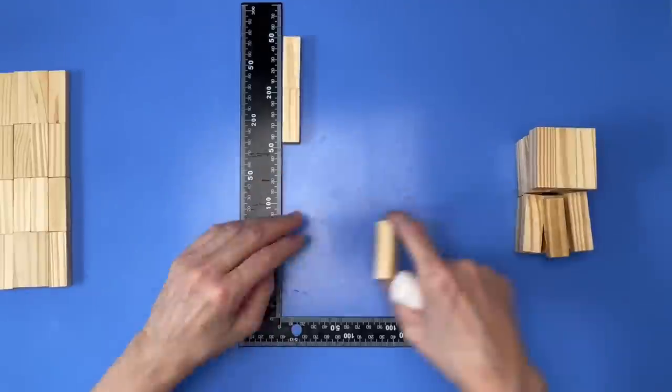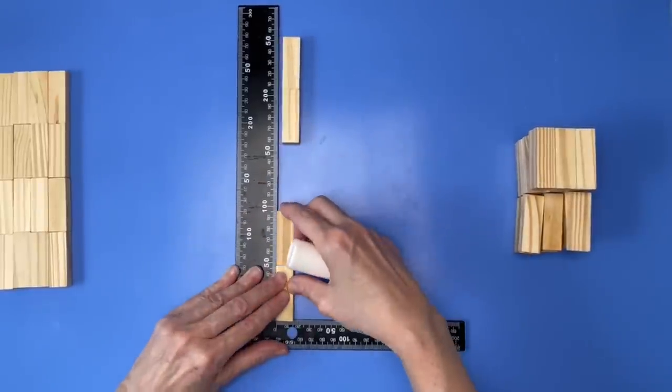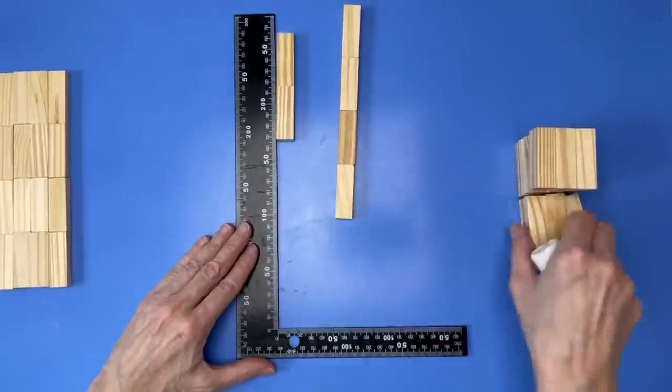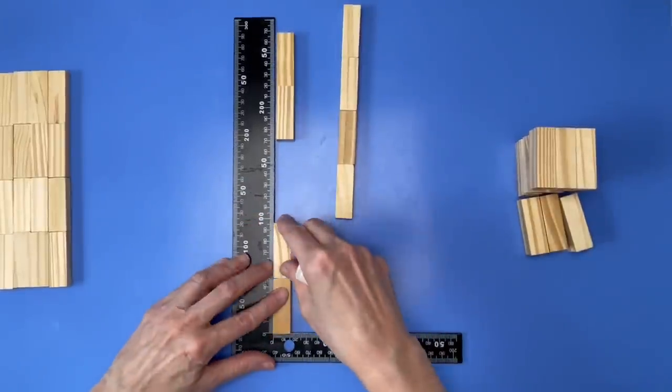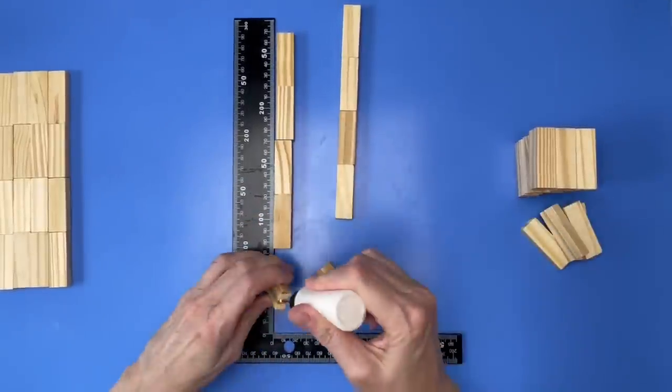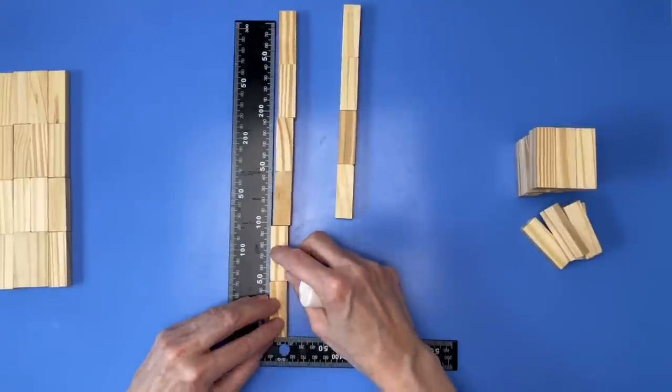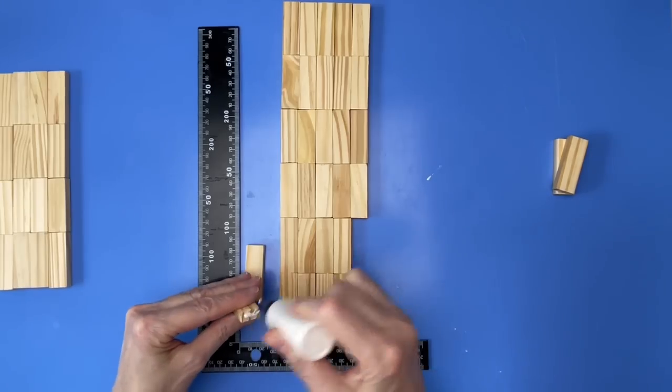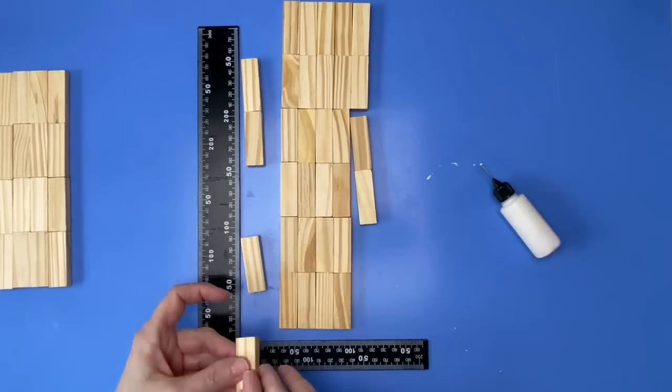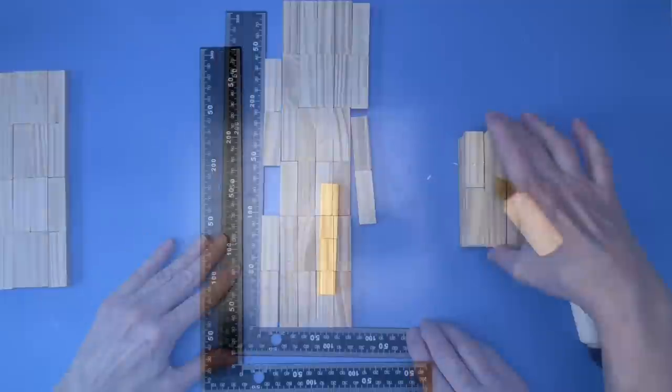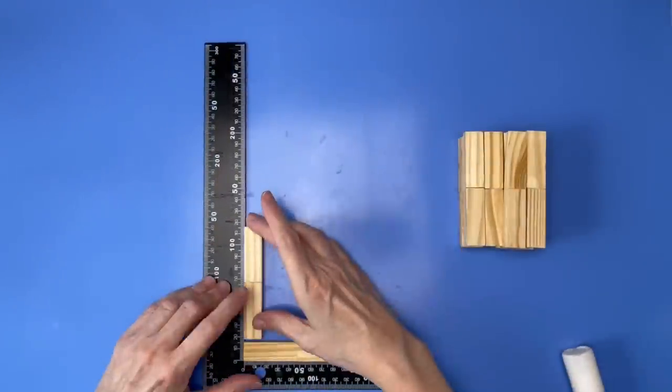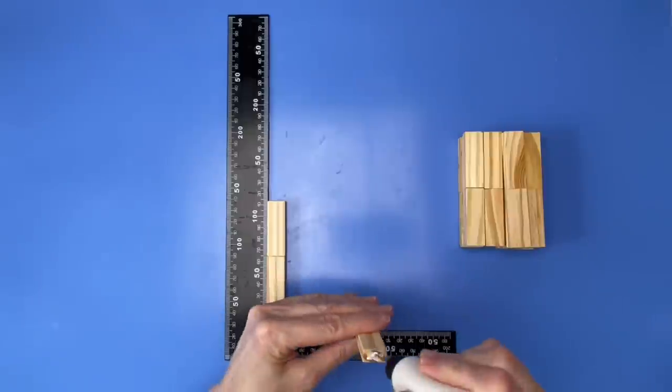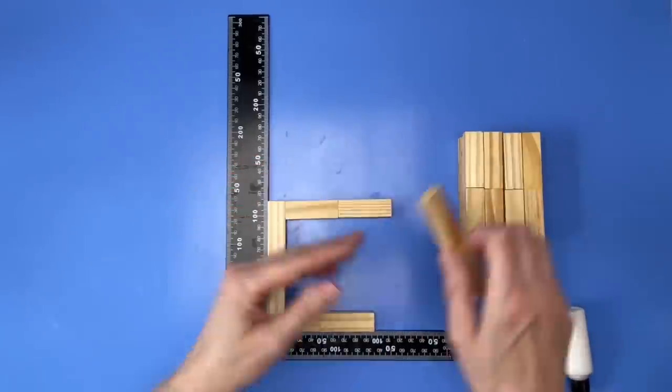Whoa, new background. Sorry about that. Next, you're going to glue together 16 sets of two. When those are dry, you'll be making four squares. Total, each square is going to be eight pieces.